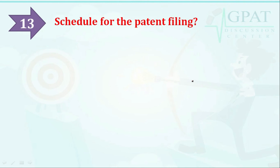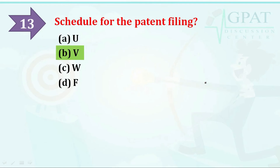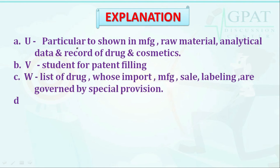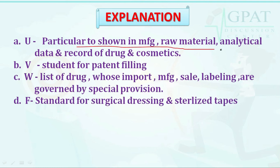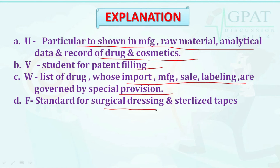The next question: which schedule is for patent filing? Options are: option A: Schedule U, option B: Schedule V, option C: Schedule W, option D: Schedule F. The correct answer is Schedule V. Schedule U covers manufacturing raw material analytical data and records; Schedule V is for patent filing; Schedule W is for drugs whose import, manufacture, and sale are governed by special provisions; and Schedule F is for standards for surgical dressings and sterilized tapes.